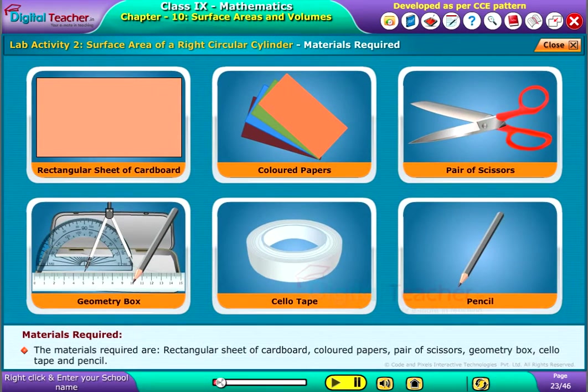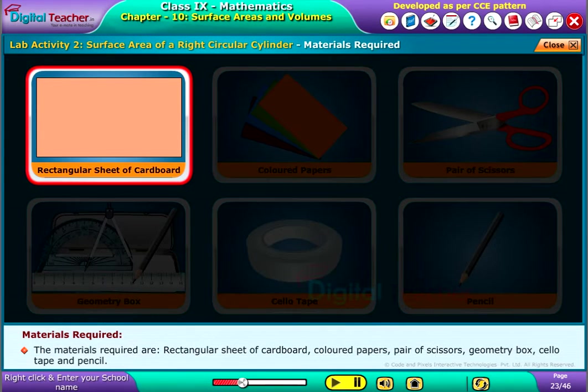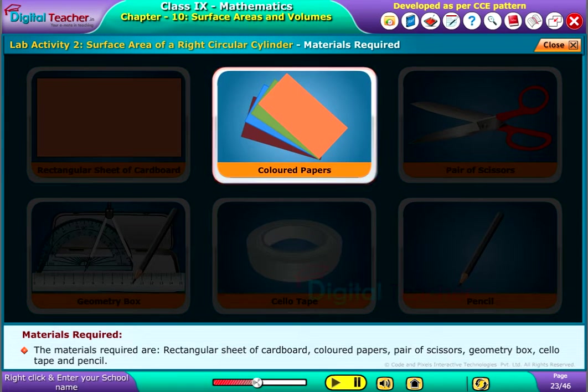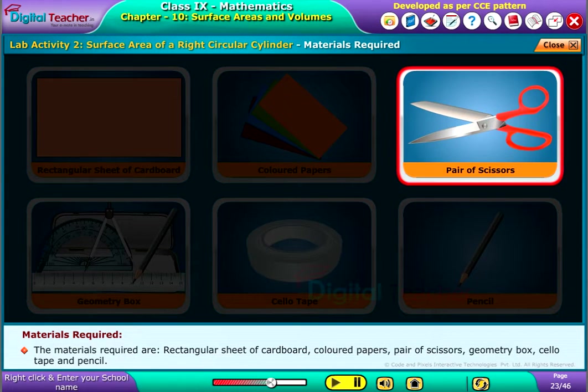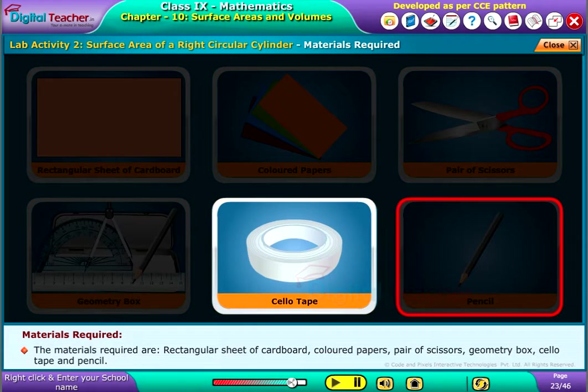The materials required are rectangular sheet of cardboard, colored papers, pair of scissors, geometry box, cello tape and pencil.